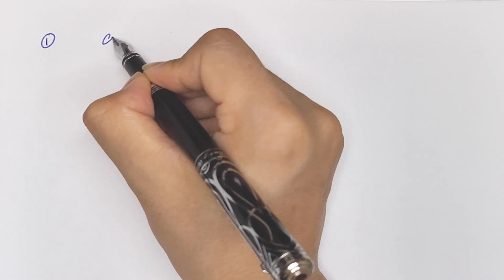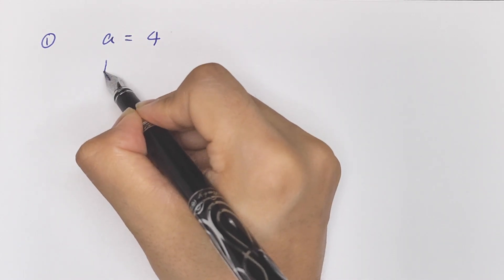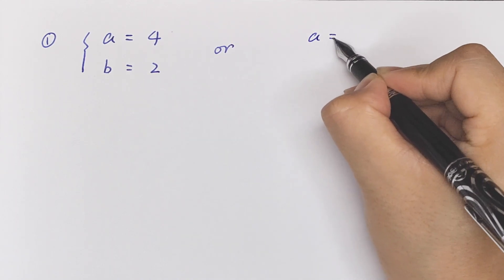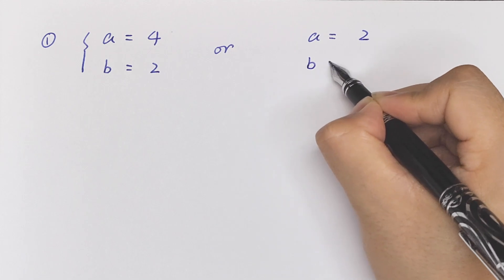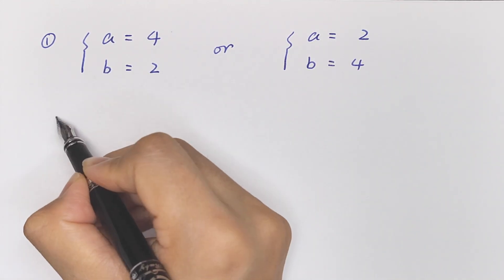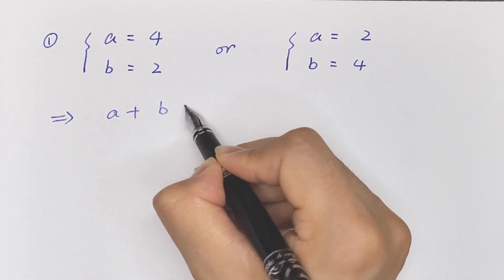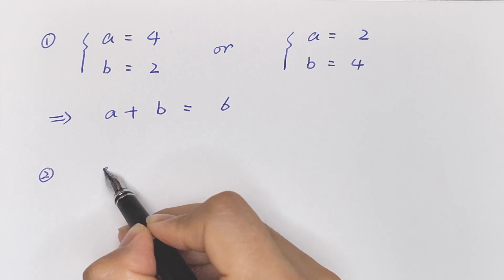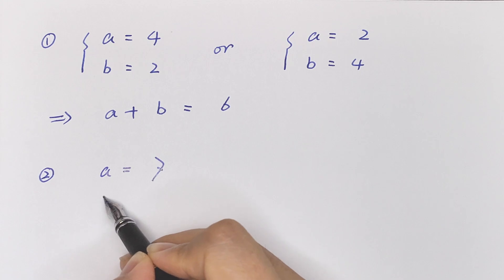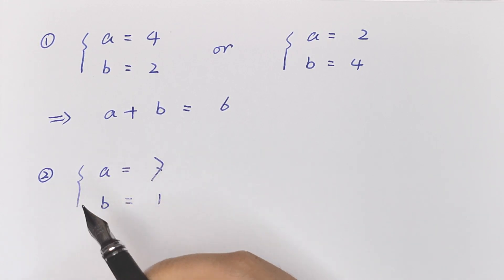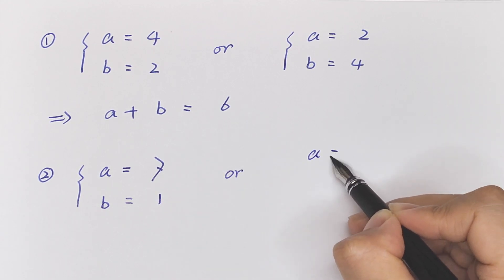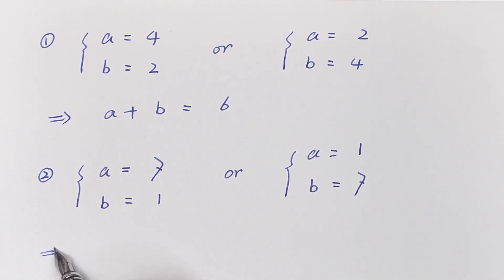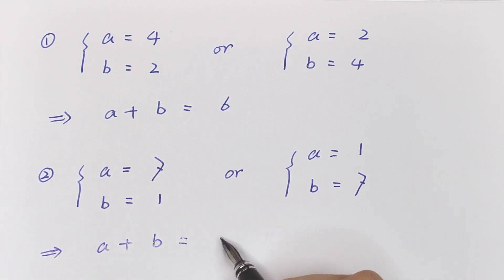Therefore, when a = 4 and b = 2, or a = 2 and b = 4, the value of a + b = 6. And when a = 7 and b = 1, or a = 1 and b = 7, the value of a + b = 8.